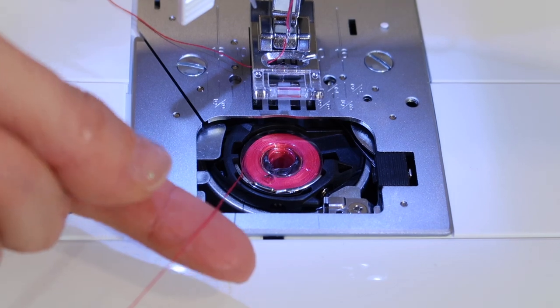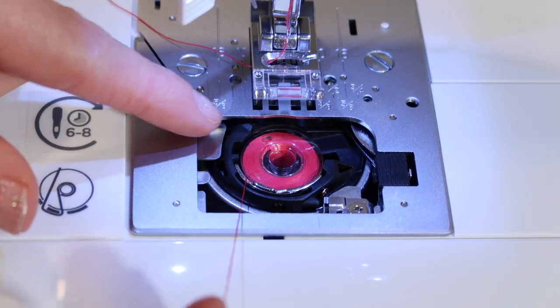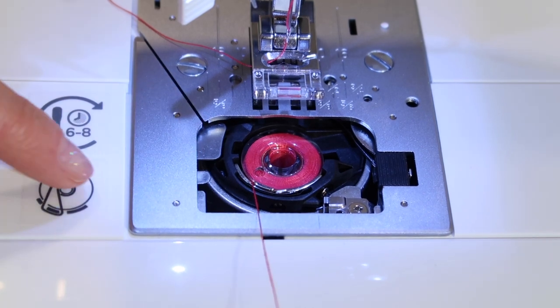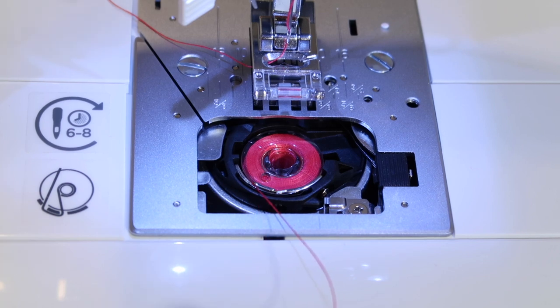When you look down here, you're going to notice that when you pull on the thread, the bobbin needs to actually be spinning counter-clockwise. You can see by this picture here, the thread is coming off the left-hand side.